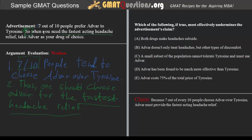So if we take one and two together, the claim is: because seven out of every ten people choose Advar over Tyrosin, Advar must provide the fastest acting headache relief. The logic at work is that one can assume Advar is faster acting because seven out of ten people choose it.